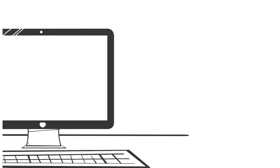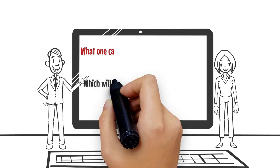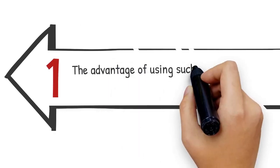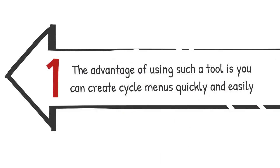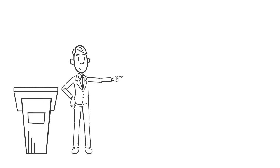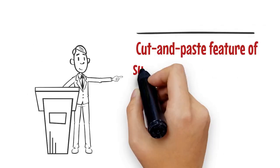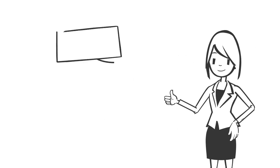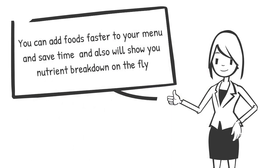What one can do instead is implement a cycle menu creation tool, which will automate your entire process of cycle menu creation. The advantage of using such a tool is you can create cycle menus quickly and easily. The cut and paste feature will enable you to expedite the process, add foods faster to your menu, save time, and also show you nutrient breakdown on the fly.